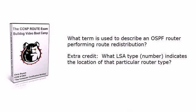Finally, what term is used to describe an OSPF router performing route redistribution? That's the term I was trying not to use in question one — that's an Autonomous System Border Router, an ASBR. And the LSA type that indicates the location of that router type is LSA number four, which lets all the other routers know where the ASBR is.